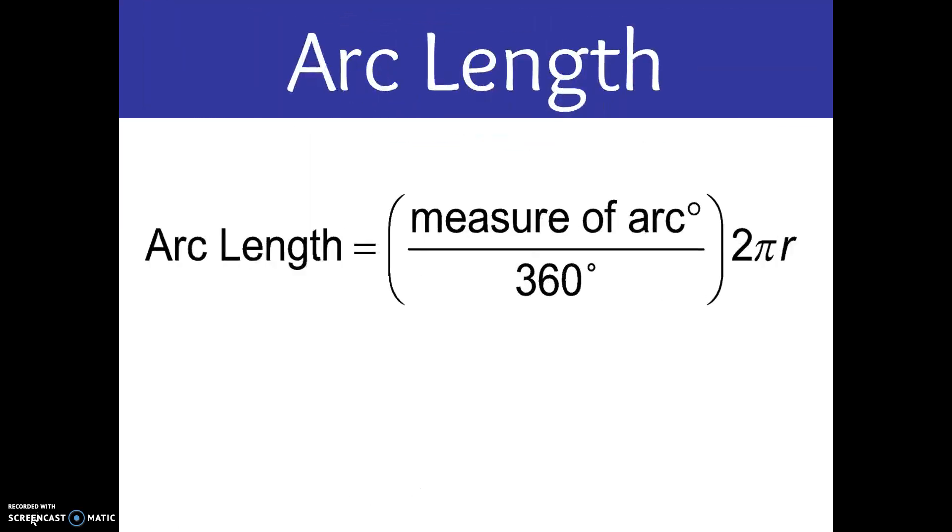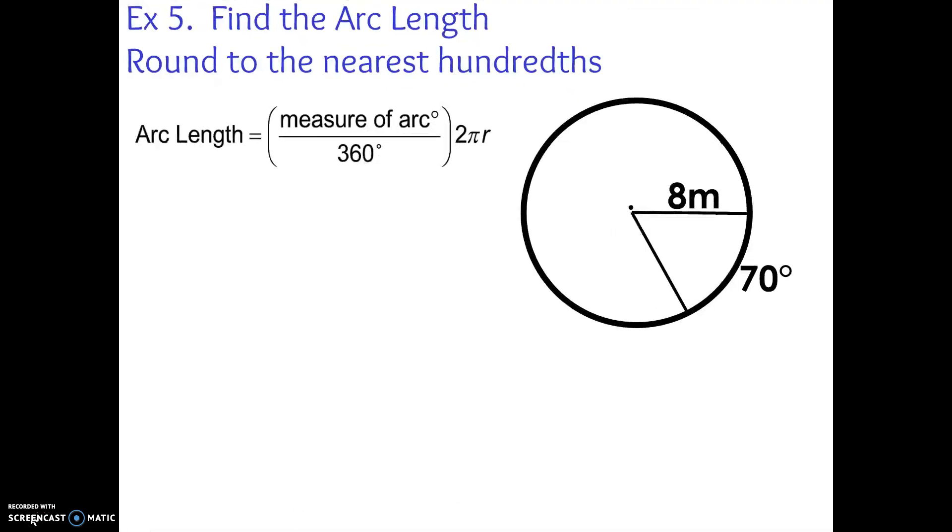Here is our formula for finding arc length. Arc length equals the measure of the arc divided by 360. So that would be our degree measure that we've been using. Divide it by 360, then multiply it by 2 pi r. Which makes sense. We're kind of just finding that one part of our circumference, the part made up of that arc. So let's practice one.